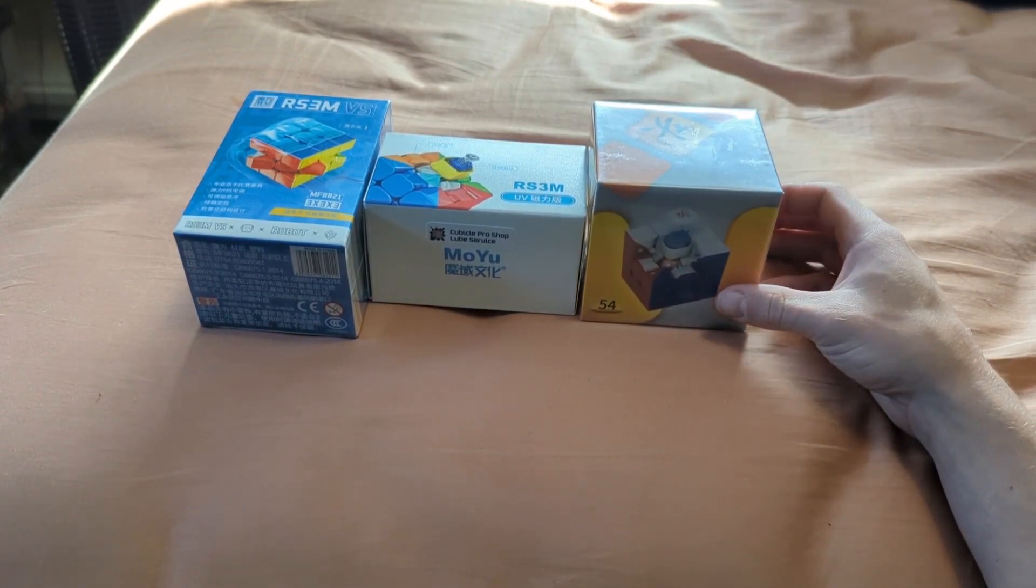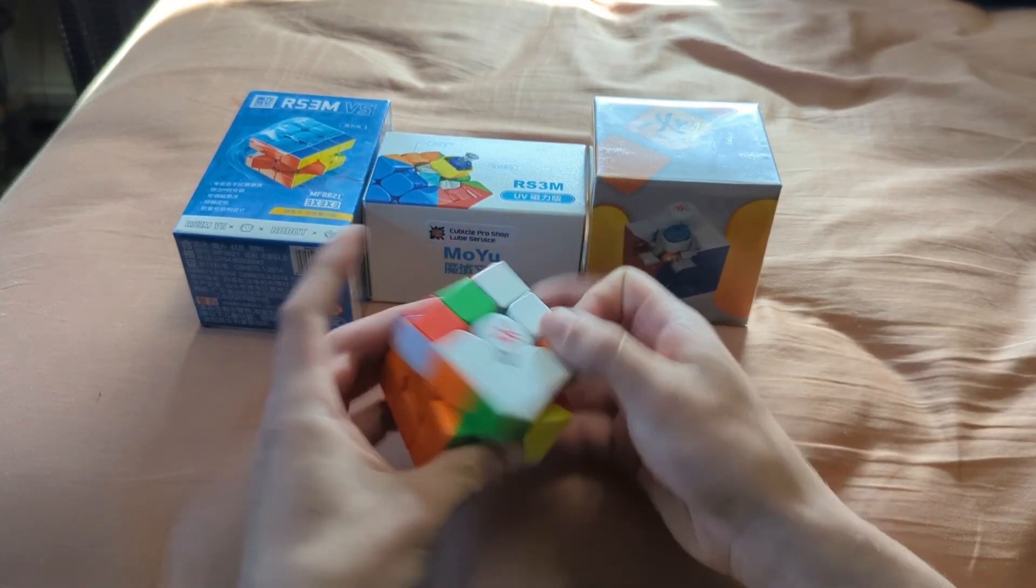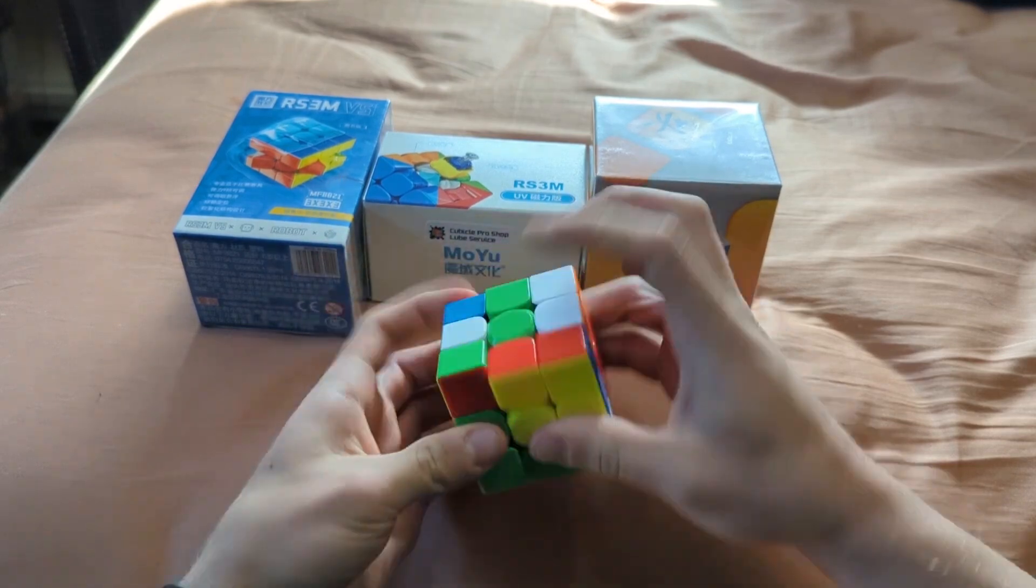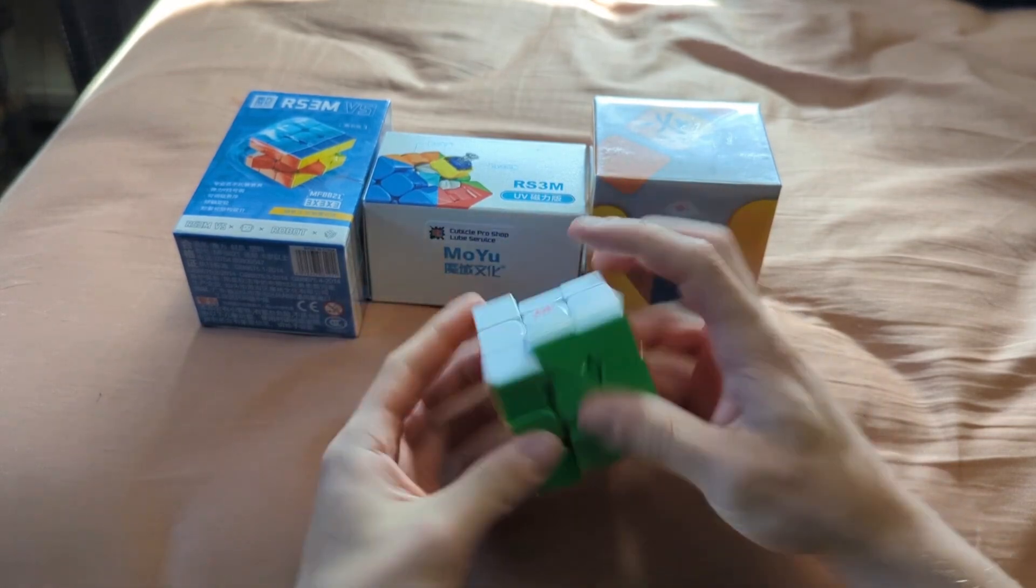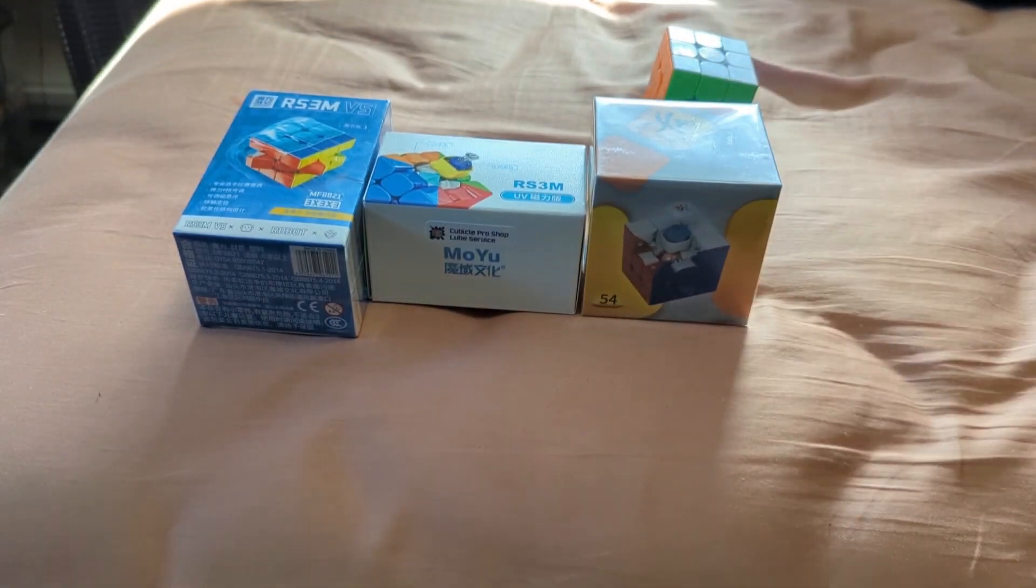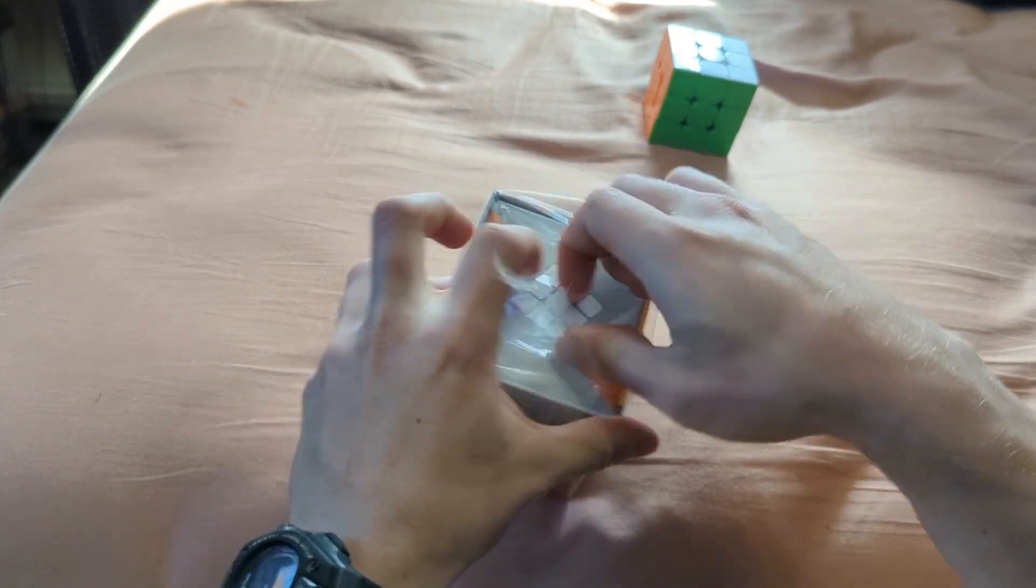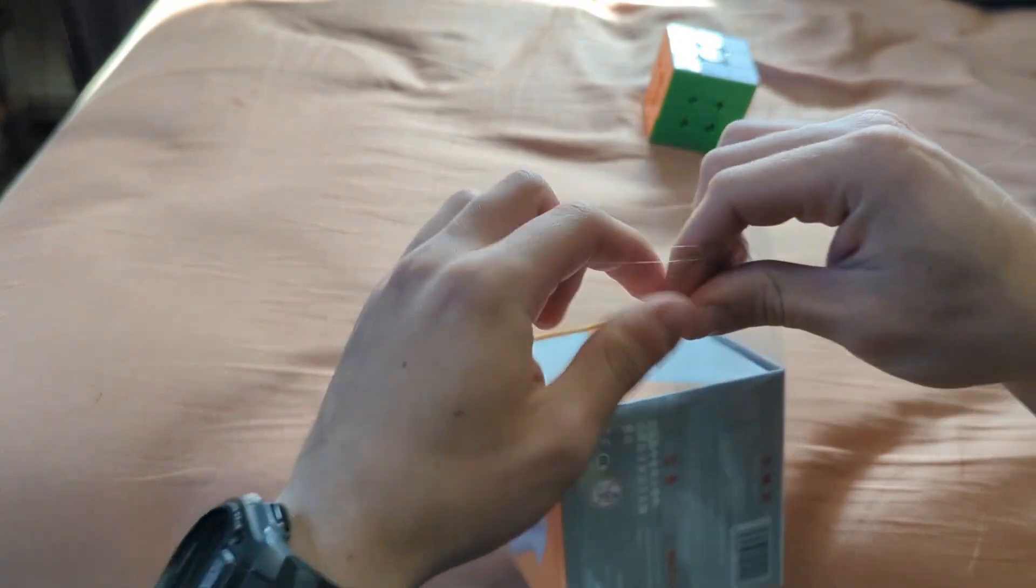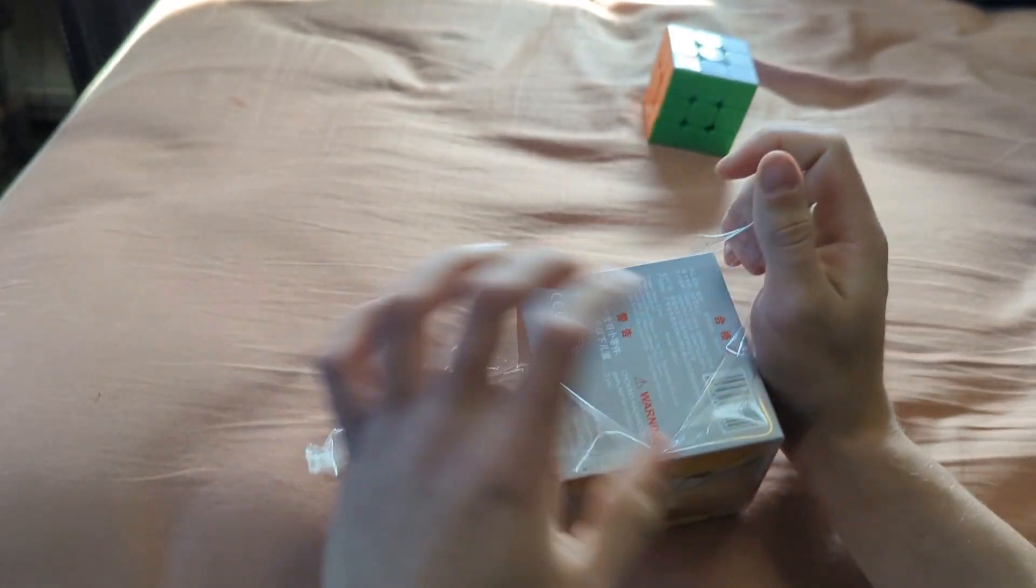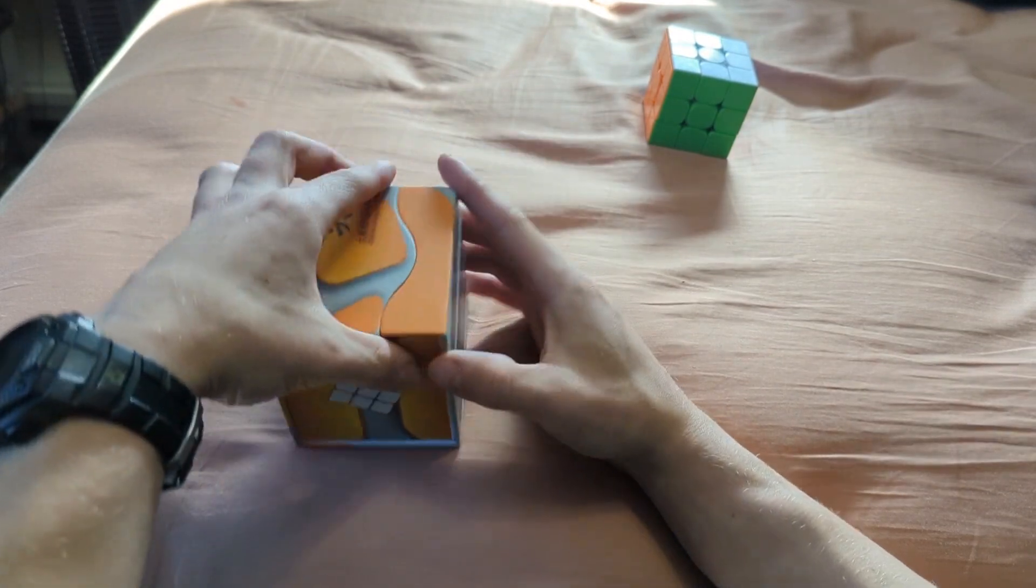This one has maglev and is 54 millimeters. I own a 56 millimeter one which is one of my favorite puzzles just because of the way it turns. I love how it feels and I feel pretty good about this one. Let's start off with the 54 millimeter Guhong Pro. I'm quite excited about this. I don't think I own a 54 millimeter, well actually the Guhong V3 is 54 millimeters I believe.